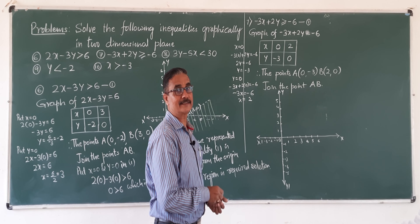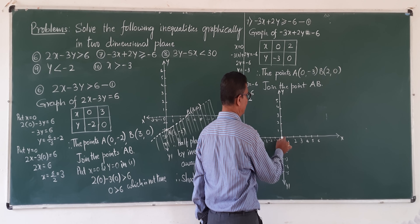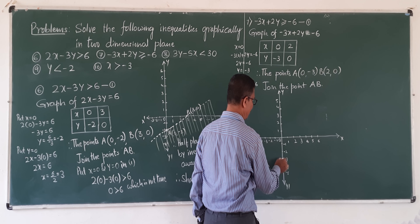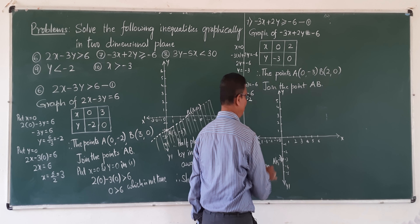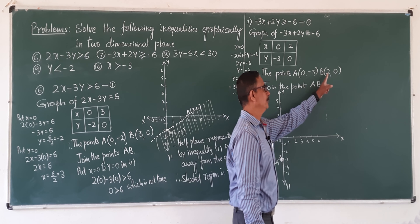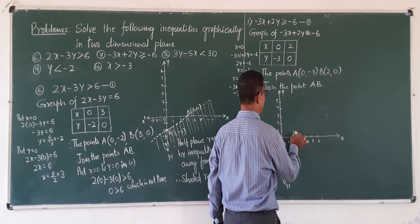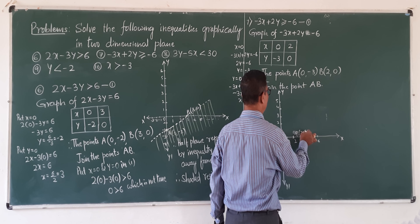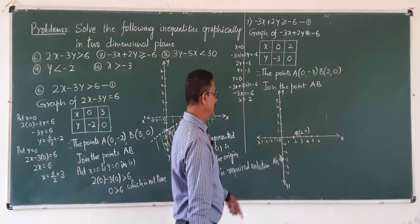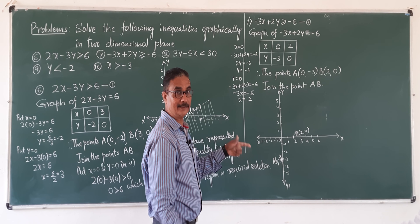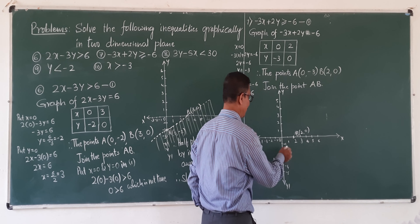Locate those points on the x and y axis. First point A is (0, minus 3): x is 0, y is minus 3. Next, B is the point (2, 0): x is 2, y is 0. Join A and B — is it a thick line or a dotted line? Thick line, because it is a slack inequality.